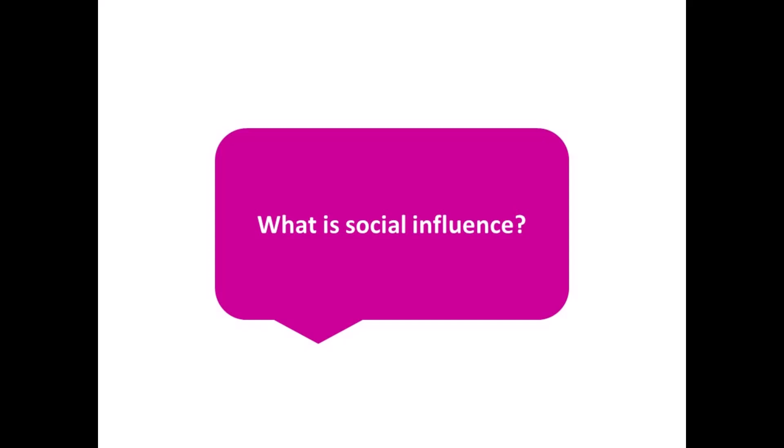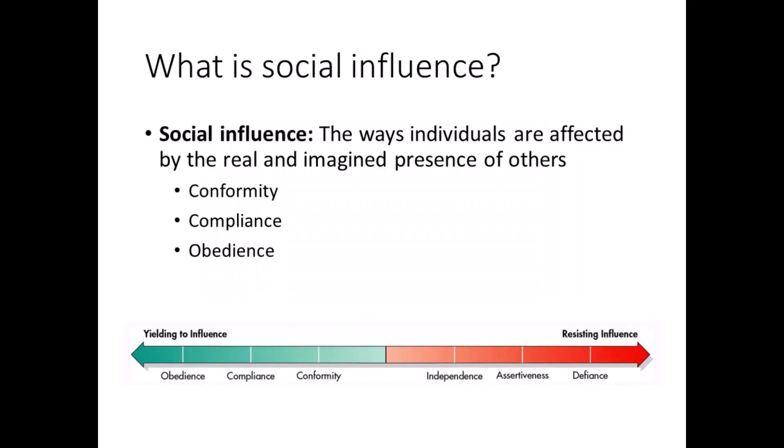What is social influence? Social psychologists define it as the ways that we are affected by the real and imagined presence of other people. We can respond by yielding to influence or by resisting it. Most of this lecture will focus on the three forms of yielding: conformity, compliance, and obedience.